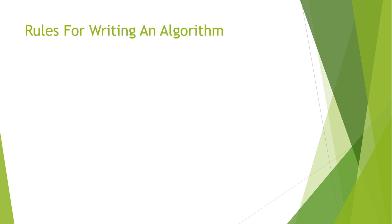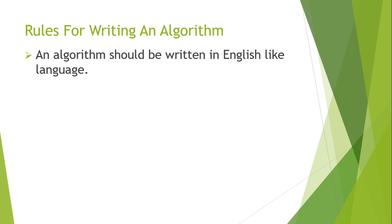Now let's look at the rules for writing an algorithm. The first rule is that an algorithm should be written in English-like language. We use English globally, so we use English to write an algorithm. The next rule is it should be written in a simple and precise manner so that everyone can understand it.